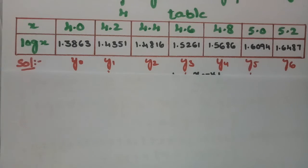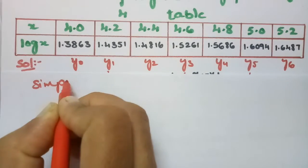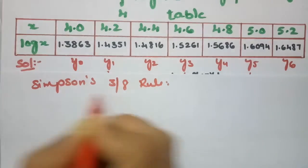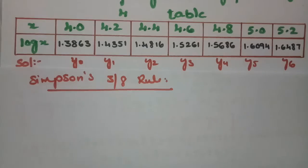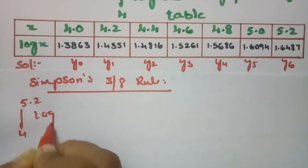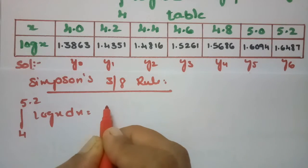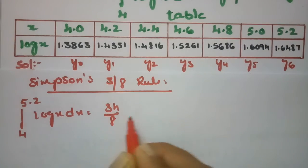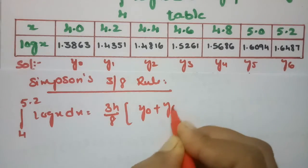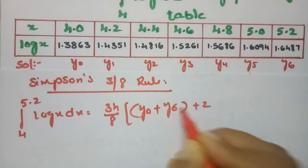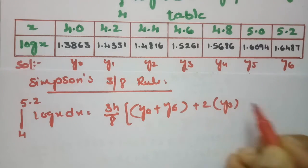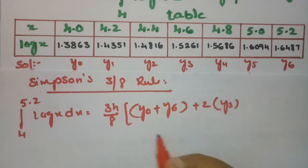Now coming to Simpson's 3/8th rule. The formula for the integral from 4 to 5.2 of log x dx equals 3h/8. We multiply h by 3/8, then take y0 plus the last ordinate y6, plus 2 times all the multiples of 3.